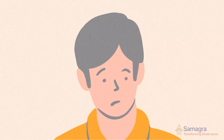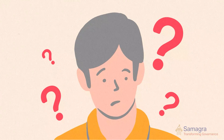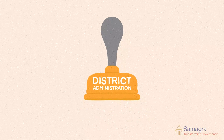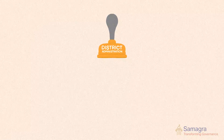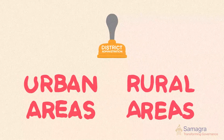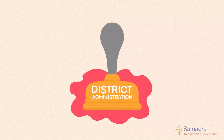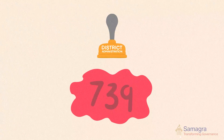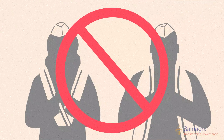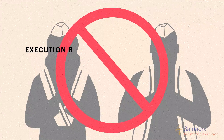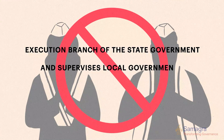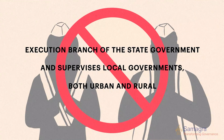But what is district administration? Most commonly, the district administration covers the geography consisting of some urban areas and some rural areas. This holds true across all 739 districts of India. District administration is not a level of government — it is the execution branch of the state government and supervises local governments, both urban and rural.